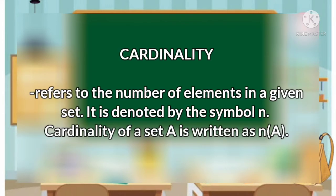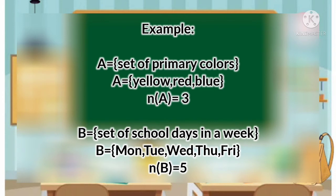Next is cardinality. This refers to the number of elements in a given set. It is denoted by the symbol N. The cardinality of a set is written as N(A). For example, set A is a set of primary colors — we have yellow, red, and blue — so the cardinality of set A equals 3. Set B is a set of school days in a week — we have Monday, Tuesday, Wednesday, Thursday, and Friday — so the cardinality of set B equals 5.